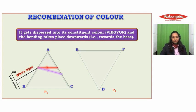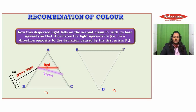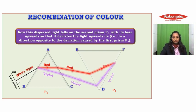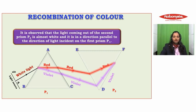This dispersed light falls on the second prism P2 with its base upwards so that it deviates the light in the direction opposite to the first prism. It is observed that the light coming out of the second prism P2 is almost white and in the direction parallel to the direction of the light incident on the first prism P1.